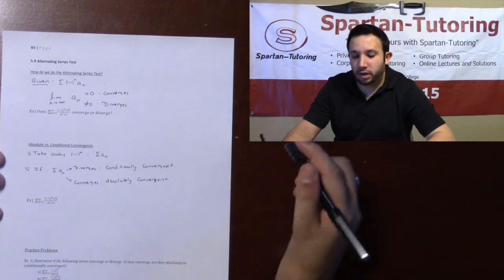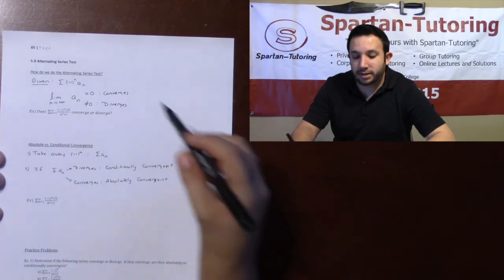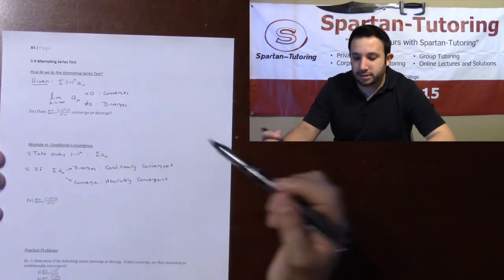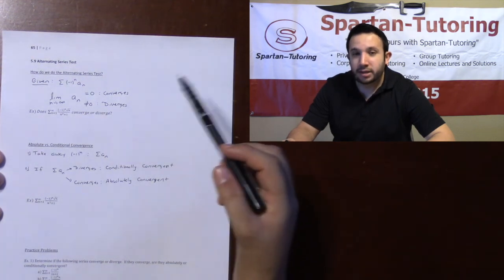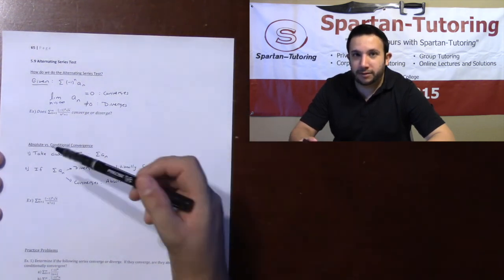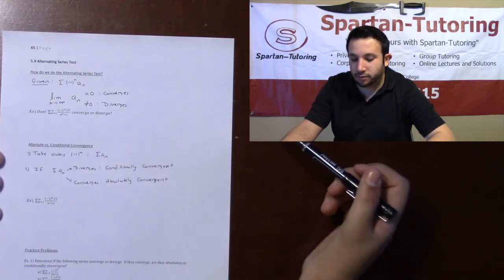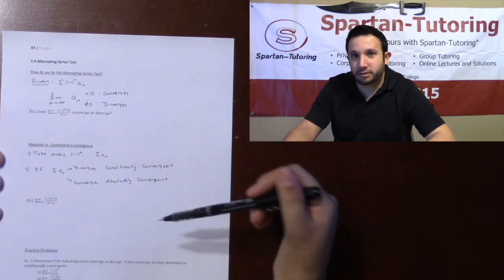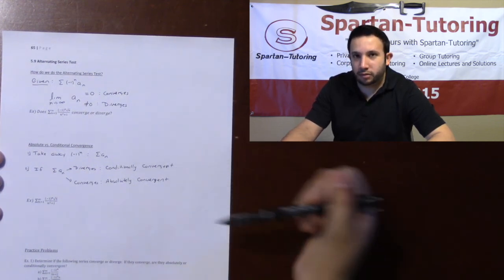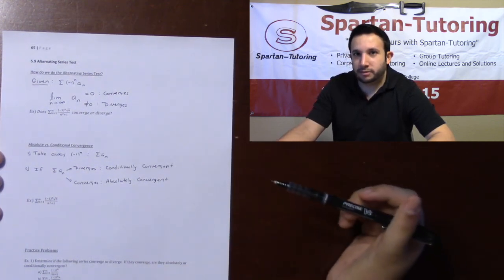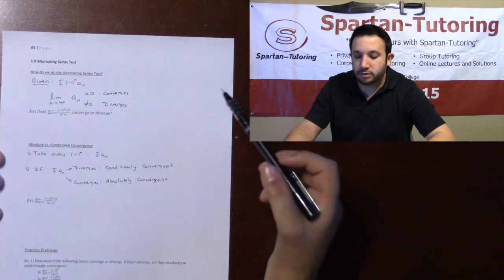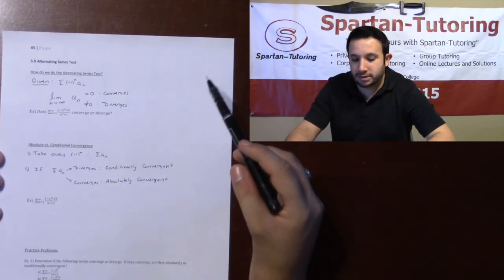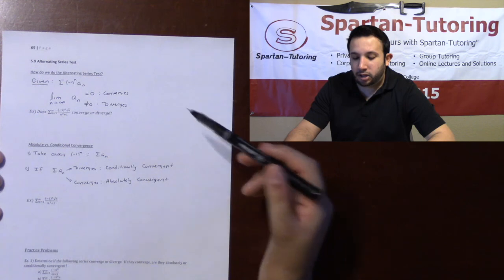In this video we're going to discuss the alternating series test, and if it converges, how to determine if it's absolutely or conditionally convergent. The alternating series test is actually one of the easiest tests to use.